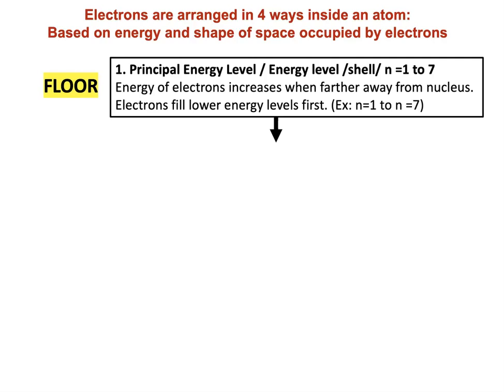When you go to an apartment building there are floors — first floor, second floor, third floor. Electrons are arranged inside the atom like people living in an apartment. Think of the people as electrons. Each person lives in a room inside an apartment, inside an apartment building that has floors. The floor is the principal energy level, also called energy level shell or lowercase n — the principal quantum number. There are energy levels 1 through 7. Energy of electrons increases when further away from the nucleus, so electrons in energy level 1 have the lowest energy and those in energy level 7 have the highest. Electrons fill lower energy levels before filling the next higher one.